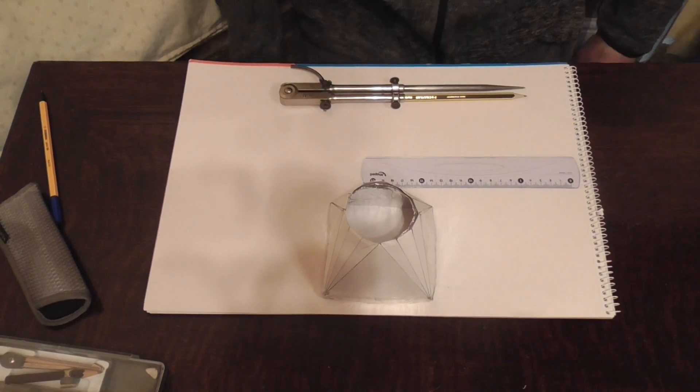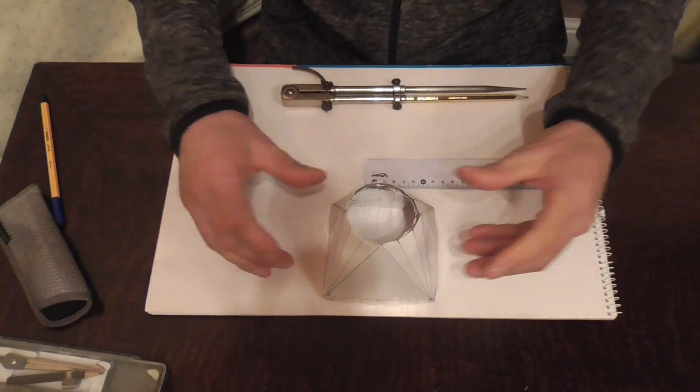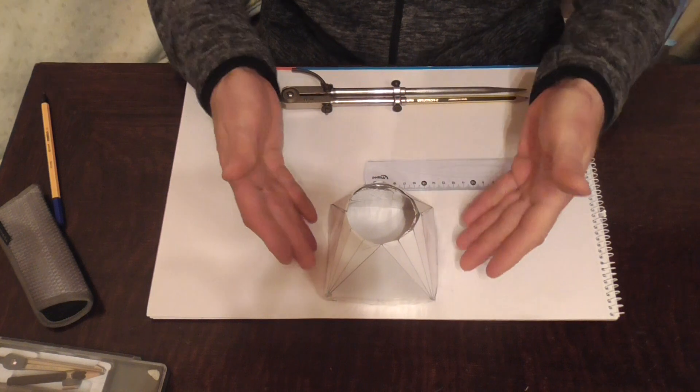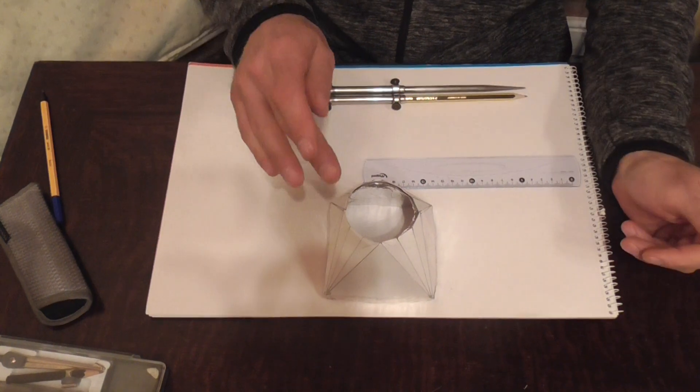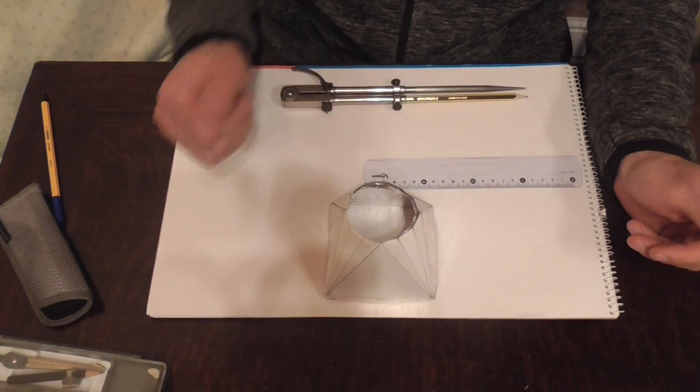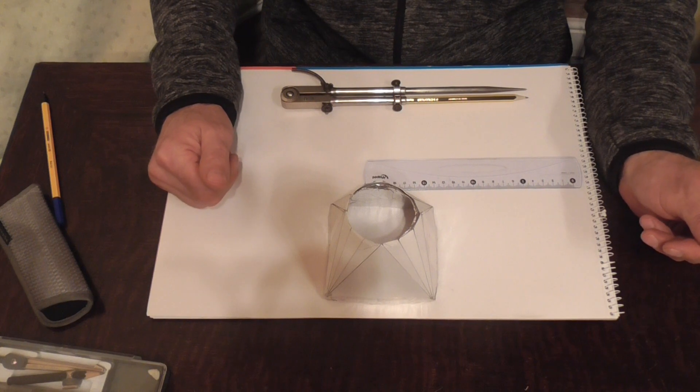Welcome back. Today's topic is the square to round. This is the model that I've made. We have a 100mm square base, 80mm height and a 60mm round diameter on the top.